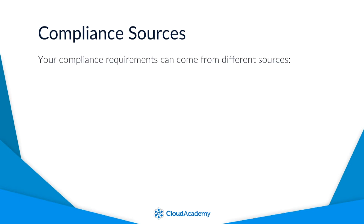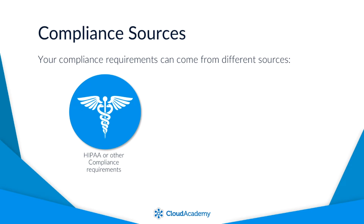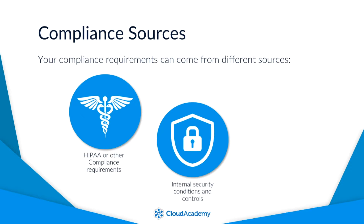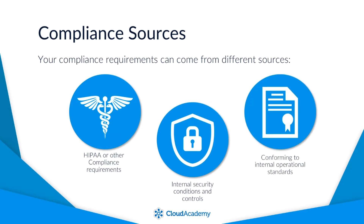Your compliance requirements can come from many different sources. For example, you may have a requirement for your environment to be HIPAA compliant if you're managing healthcare records. Or perhaps your security team requires certain criteria to be adhered to, such as ensuring SSH is not applied to specific security groups. Or your operations team may dictate that certain EC2 types should only be used for certain environments to conform to internal standards. Maintaining compliance and internal standards for numerous parties, both internal and external, can be difficult to manage and can lead to mistakes, which in turn will eventually lead to non-compliant services making their way into production.